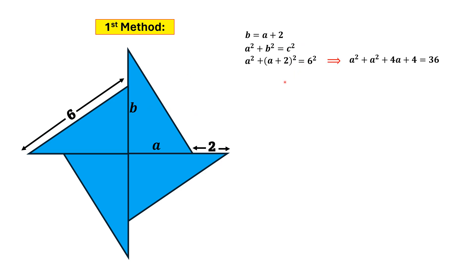Simplifying the binomial on the left, we will get a² + a² + 4a + 4 = 36. If we simplify this equation, we will find 2a² + 4a - 32 = 0. Dividing this equation on both sides by 2, we can find a² + 2a - 16 = 0.